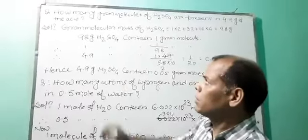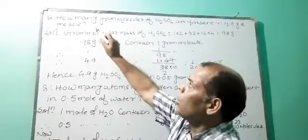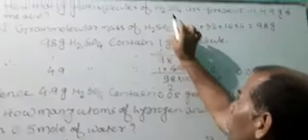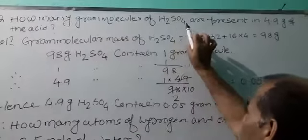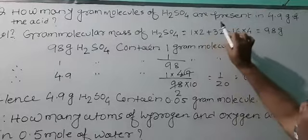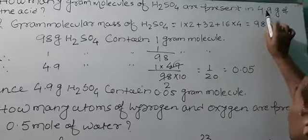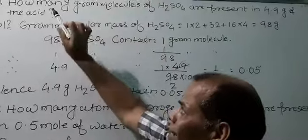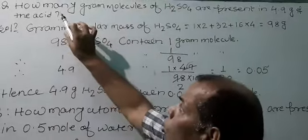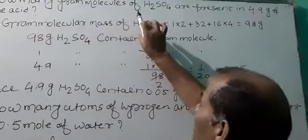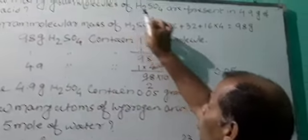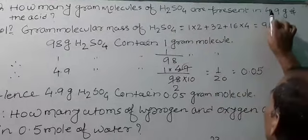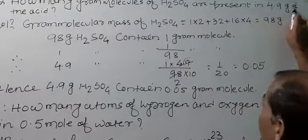One of the questions is: how many gram molecules of H₂SO₄ are present in 4.9 grams of the acid?